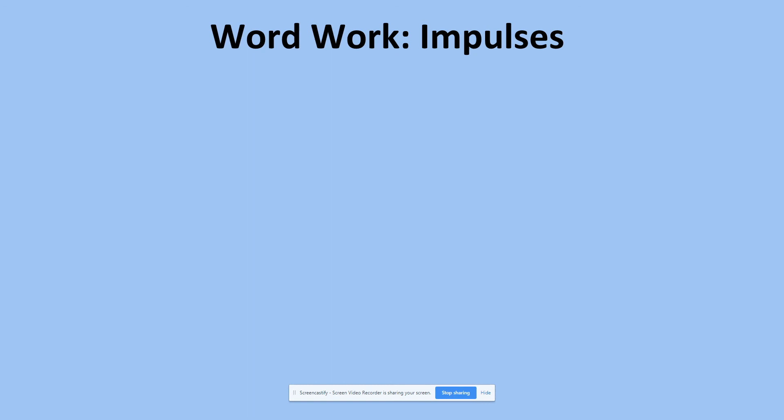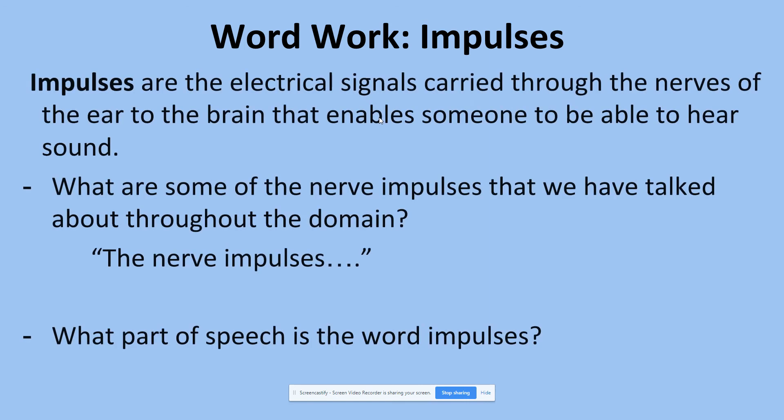Our word for the day is impulse. In the read aloud, we heard: 'The sensory hair cells bend and stretch, producing nerve impulses.' Impulses are the electrical signals carried through the nerves of the ear to the brain that enable someone to hear sound. We've talked about several different impulses throughout this domain. In Lesson 5, we discussed the impulses that travel to and from the brain to enable you to use your five senses. In Lesson 6, we discussed the role of nerve impulses in the eyes. We also talked about reflexes being nerve impulses, because it's an electrical signal carried through the brain.